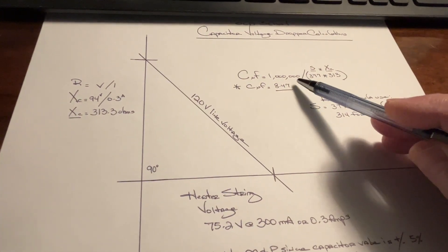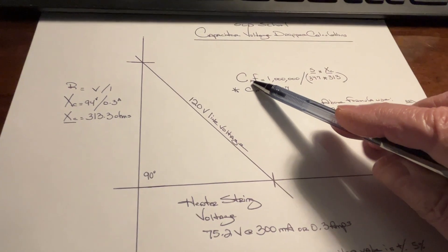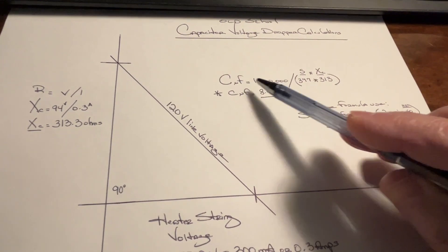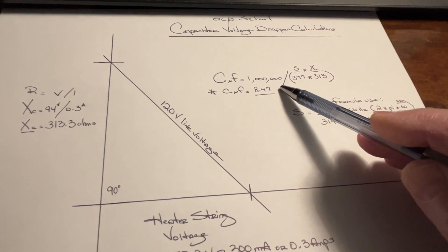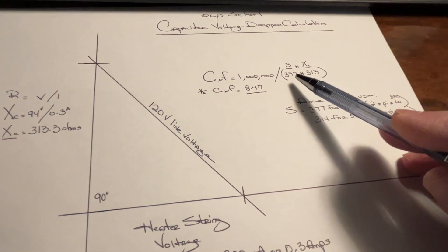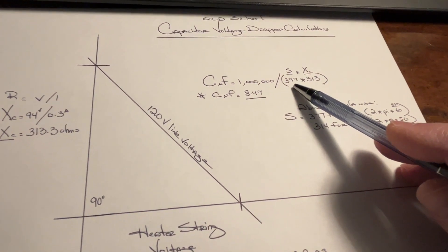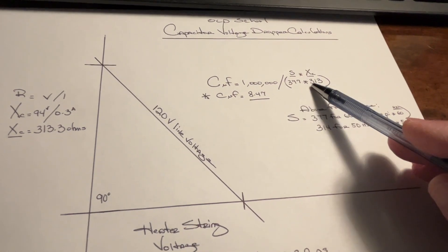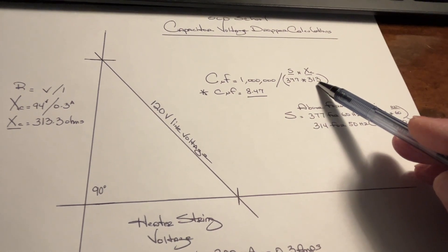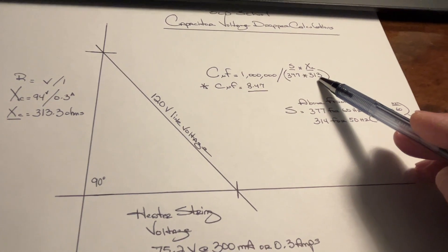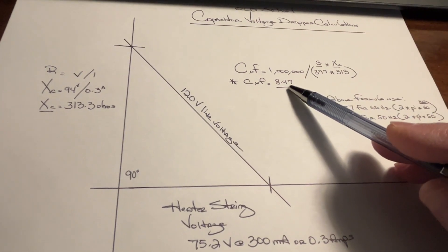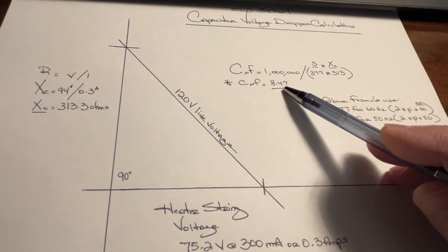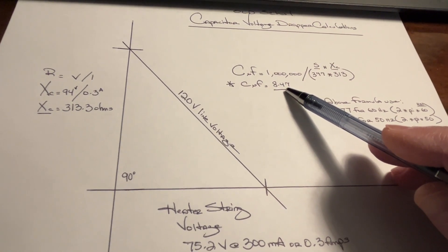I can take that information to calculate the capacitor needed, in microfarads: 1 million divided by 377. I'll come back to that in just a moment. That's a fixed number times the 313 for XC. And I need a capacitor roughly at 8.47 microfarads.